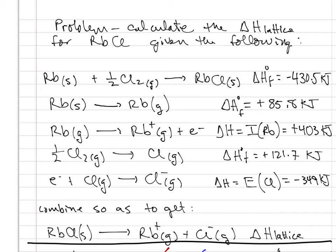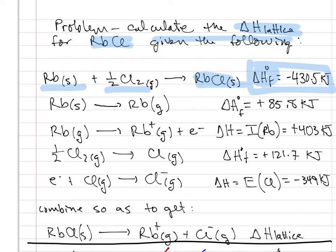Let's consider a related problem: calculating the lattice energy of rubidium chloride given the following data. The delta H of formation under standard conditions for rubidium chloride as a solid involves rubidium as a solid combining with one-half mole of chlorine as a diatomic gas, and this delta H of formation is minus 430.5 kilojoules. The delta H of formation for rubidium in the gaseous state derives from vaporization of solid rubidium — rubidium in its standard state — and has an energy of plus 85.8 kilojoules. The ionization energy of rubidium, from rubidium in the gaseous state losing an electron to become a rubidium cation, is plus 403 kilojoules.